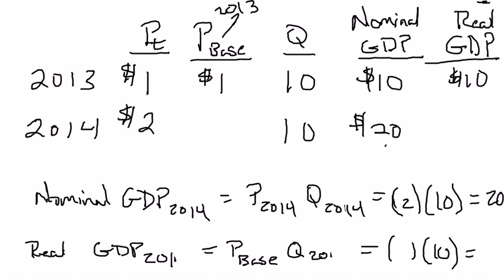Now, real GDP in 2014 is going to be the price from the base year times the quantity from 2014. Here's where the differences come in. The price in the base year is not the same as the price in 2014 — because 2013 is the base year, we use prices from that year, meaning we use the price of $1. So real GDP for 2014 is $1 times 10 apples equals $10.